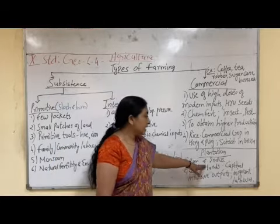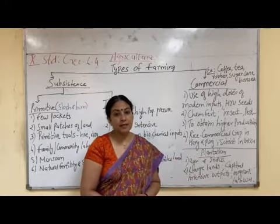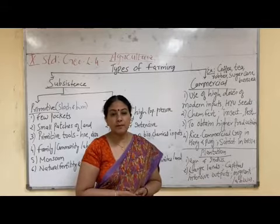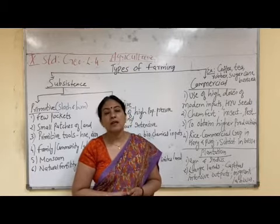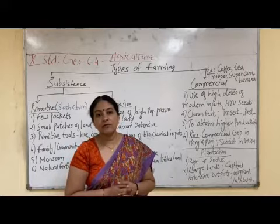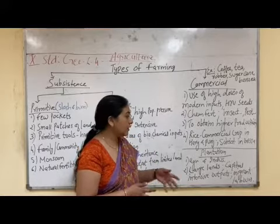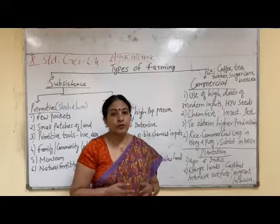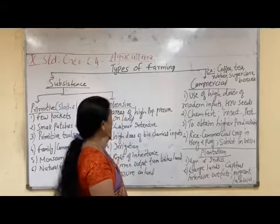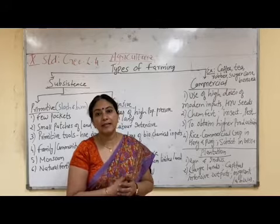Agriculture and industries going hand in hand is the second feature of plantation agriculture. The third feature is capital — because it is done in a large piece of land with more inputs, the capital required is very high. So it is not affordable for all; plantation agriculture is done by rich people because it is capital intensive. Output is also more, and since more labor is required than in intensive subsistence agriculture, they hire migrant laborers from outside.